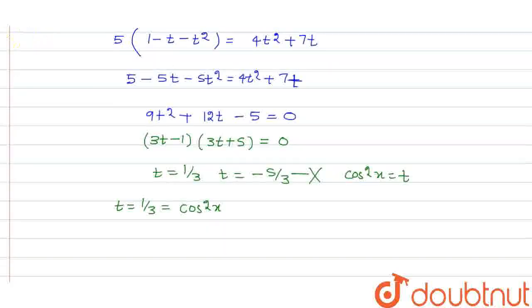Now we need to find cos 4x. So first just find cos 2x. So cos 2x will be 2 cos square x minus 1. That means this is 2 by 3 minus 1. That is equal to minus 1 by 3.